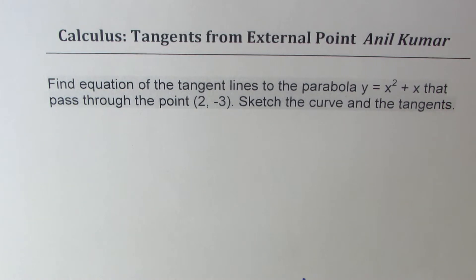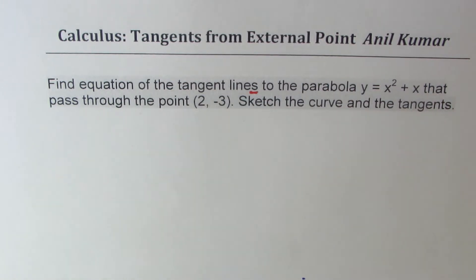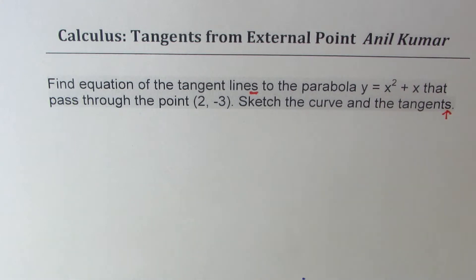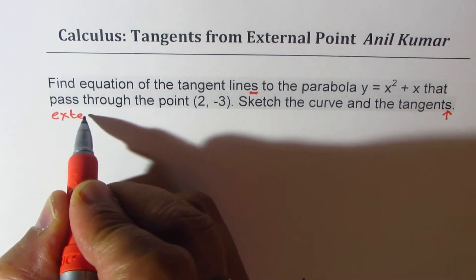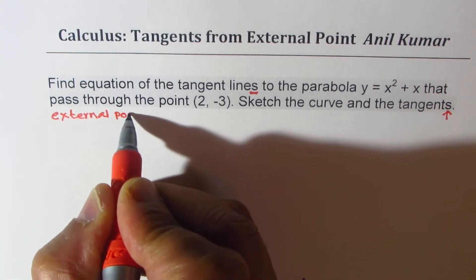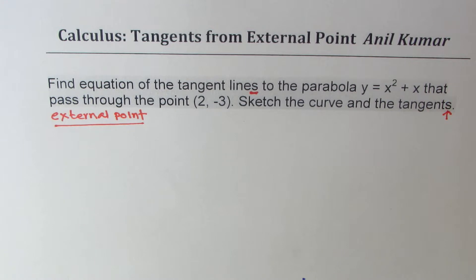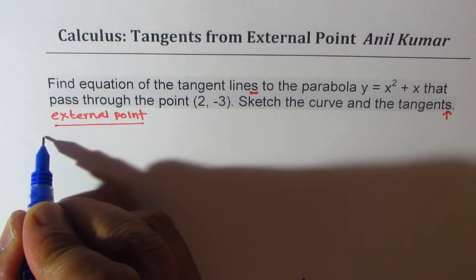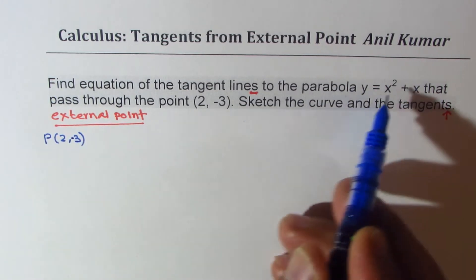Now, I'd like you to look into this question carefully. It says equation of tangent lines — that means we might have more than one tangent. More than one tangent is possible if we are taking an external point. The point given to us as (2, -3) is not on the curve.